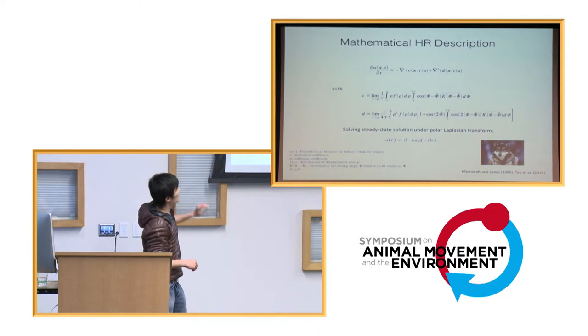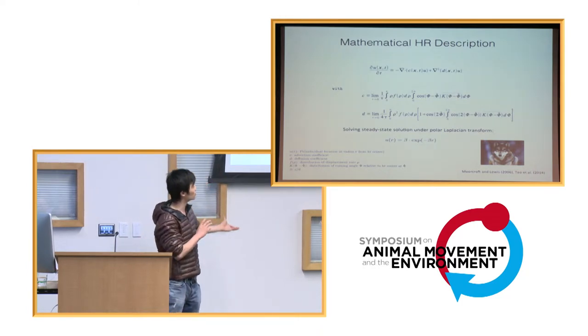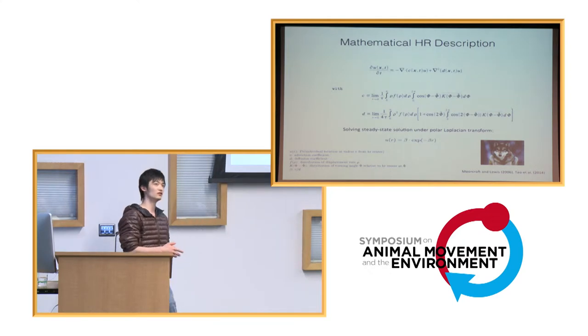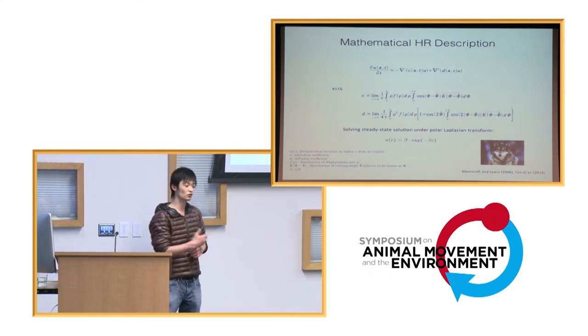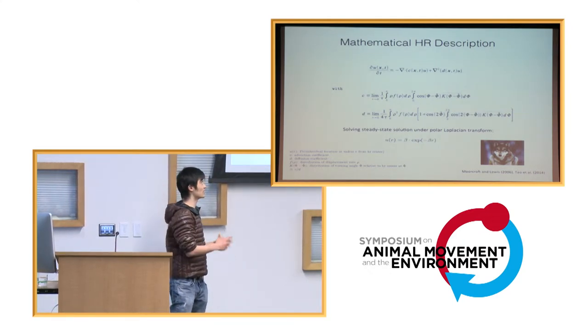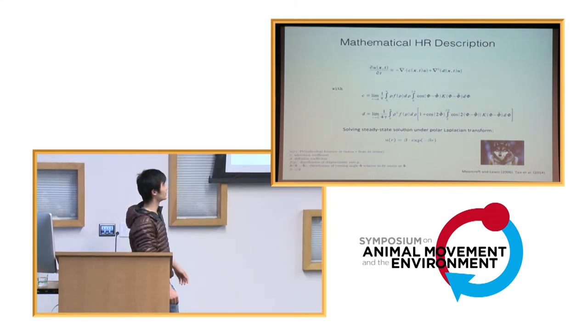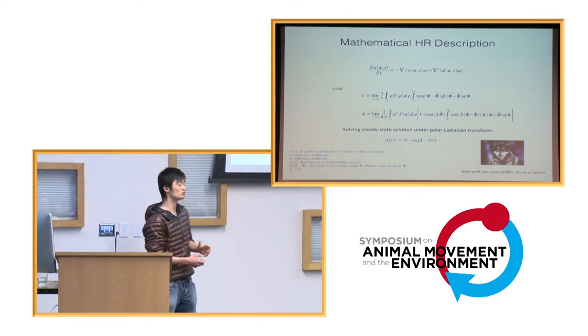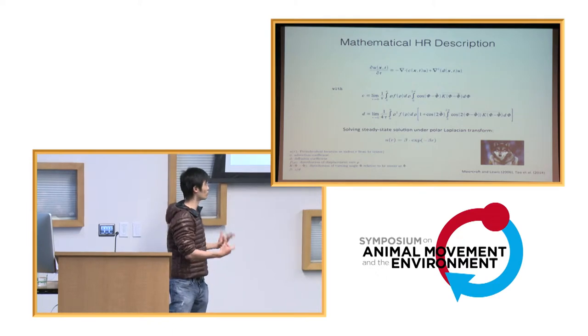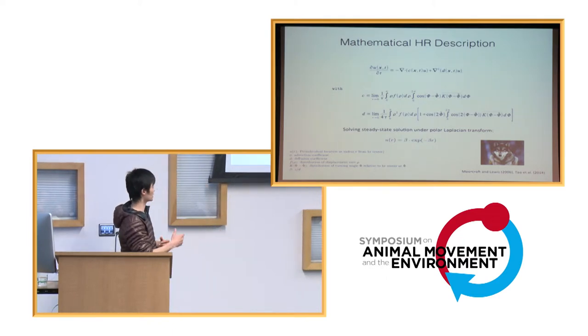This could be 1D or 2D. And the first term on the right hand side, that's the advection component. So that determines sort of the gravitational pull an animal has towards, for instance, a densite or some kind of a nest. The second term on the right hand side, that's the diffusion term. So that includes basically a random process through the animal's movement.